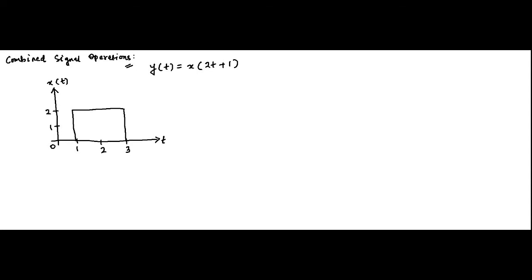Hello friends, we are again here with some more questions on combined signal operations. In the previous videos we discussed questions on combined signal operations. Here we have another question. This operation is expressed as y(t) = x(2t+1). This combined signal operation is a combination of two individual signal operations, starting from the original signal x(t).